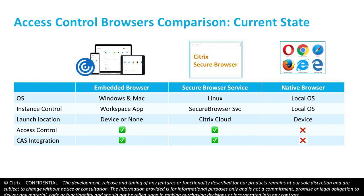A common question we get is comparing and contrasting different browsers and what the experience looks like. The main takeaway is that if you're using the embedded browser, you have a fully native experience, and the cloud app controls are enforced locally on the device. Whereas if you're using secure browser, it's all enforced in the cloud. As of now, we don't have access control and CAS integration for the native browser, but that is something we're working on in the roadmap and will be available soon. Once available, you'll be able to use your standard browser and still get the web filtering controls. Web filtering for native browser is coming on the roadmap.